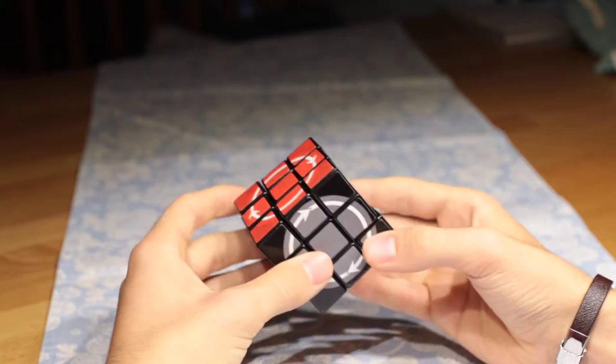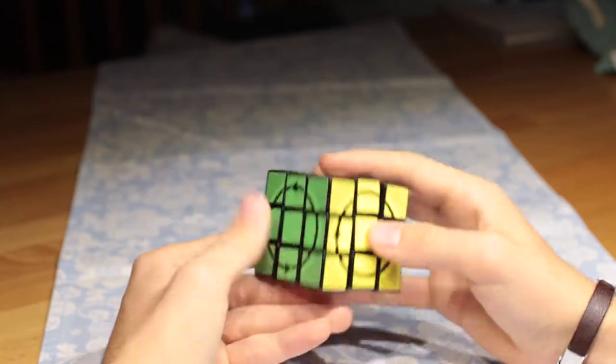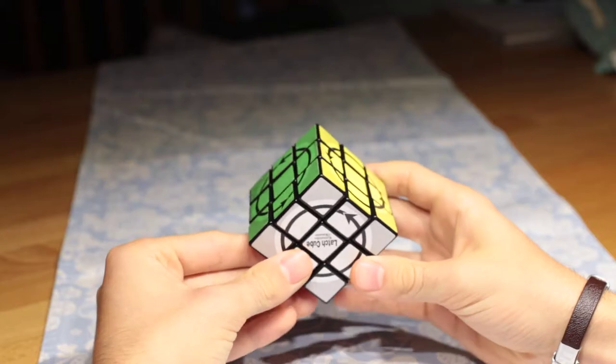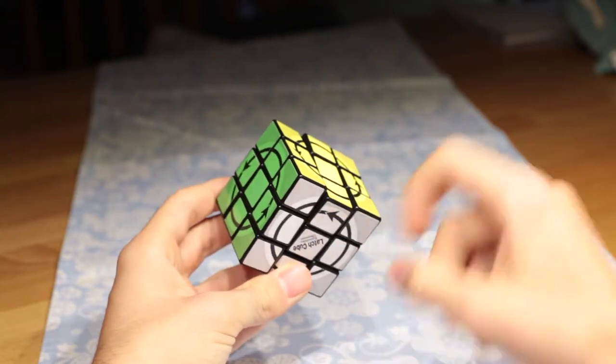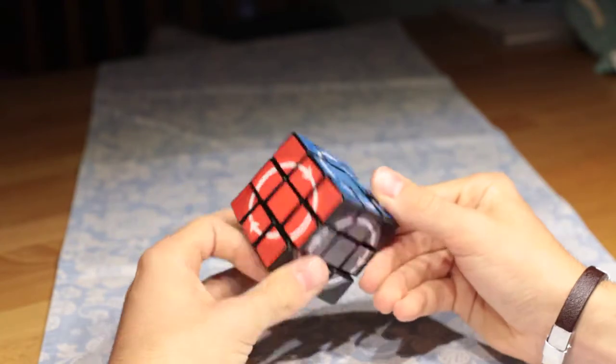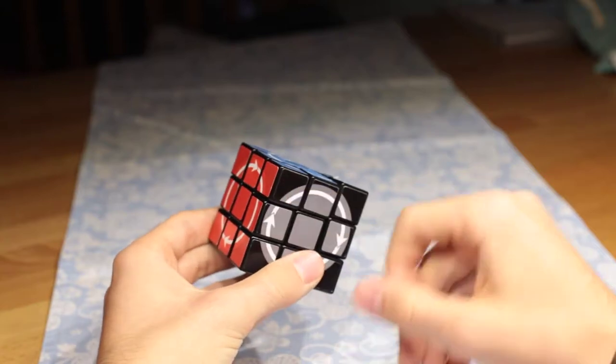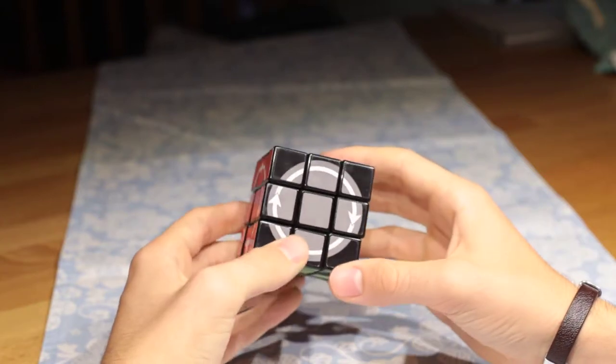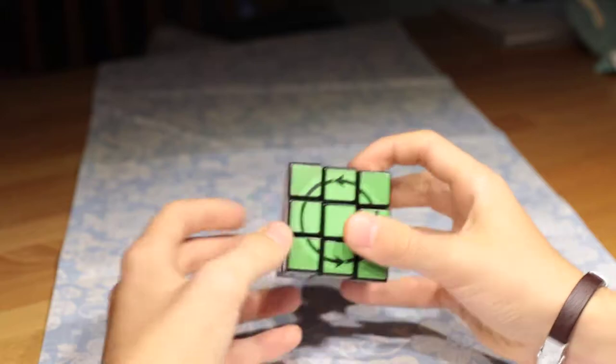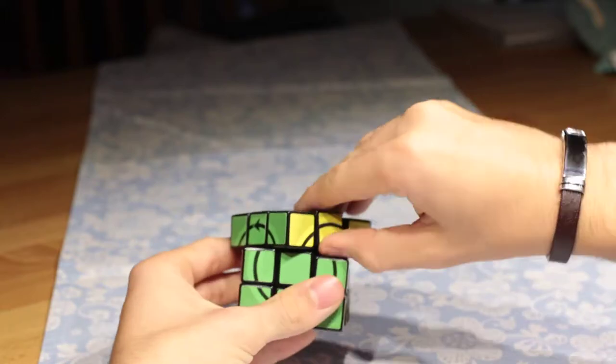The white arrows spin clockwise. The black arrows spin counterclockwise. That means this corner is surrounded by counterclockwise spinning faces and this corner is surrounded by clockwise spinning faces. All the other corners are surrounded by both types.